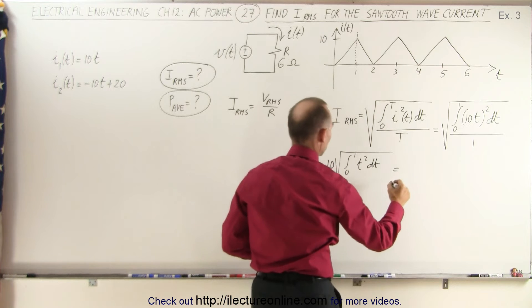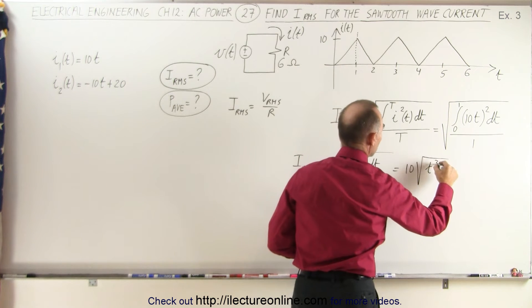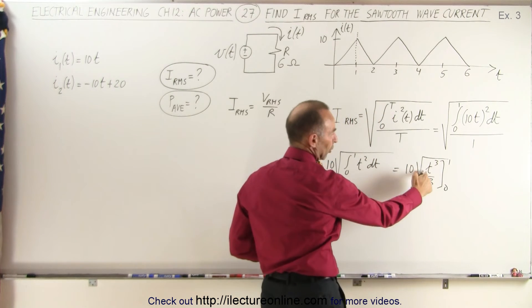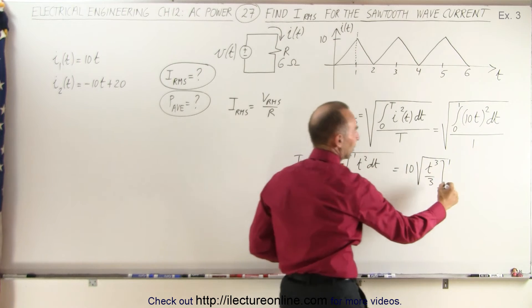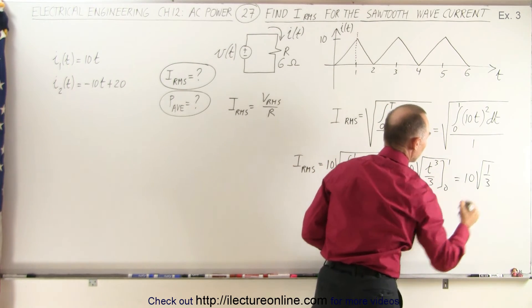This equals 10 times the square root of T cubed over three, evaluated from zero to one. Plugging in the lower limit gives zero; the upper limit gives 10 times the square root of one over three.